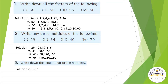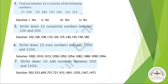Question Number 3: Write down the single digit prime numbers. You have to write single digit prime numbers. They are 2, 3, 5, 7. Question Number 4: Find out whether 16 is a factor of the following numbers. If it is, you have to write yes; if it is not, you have to write no.